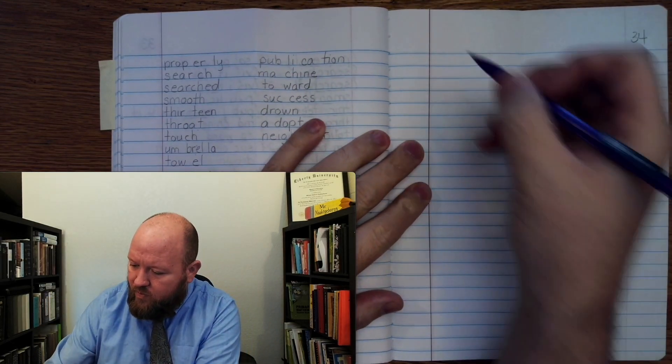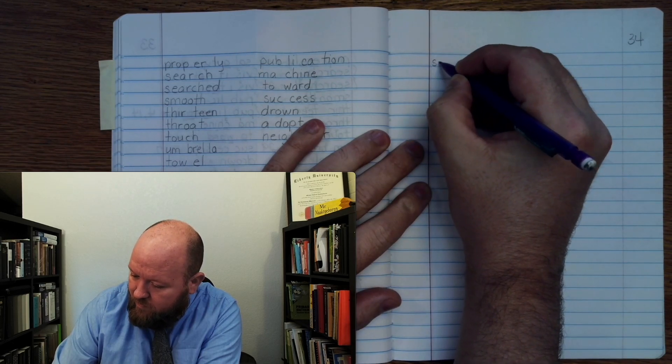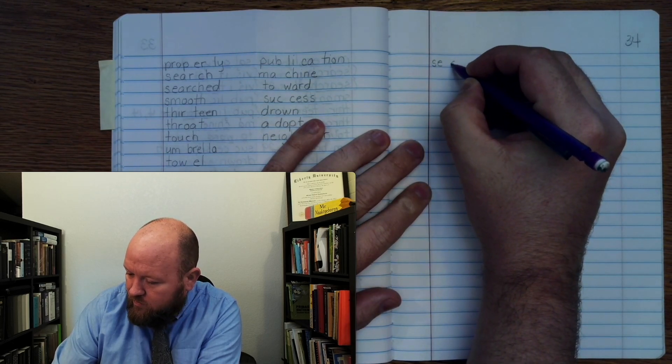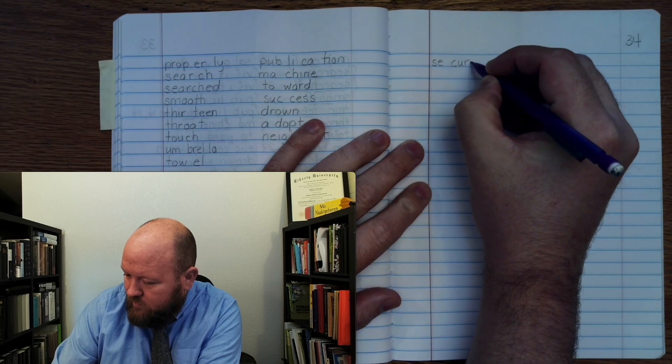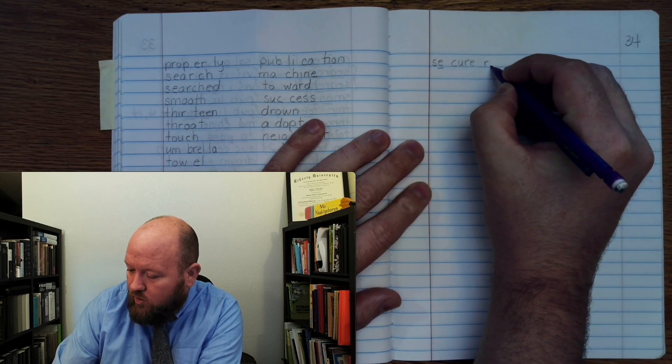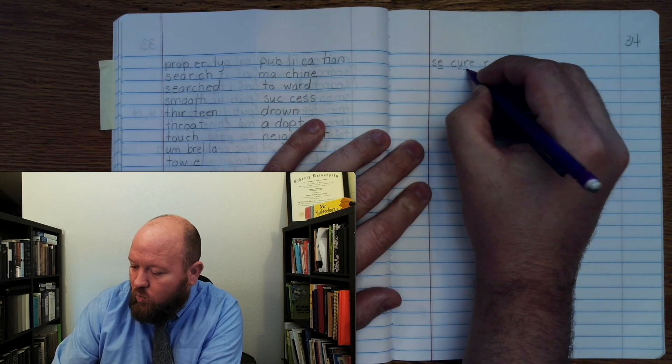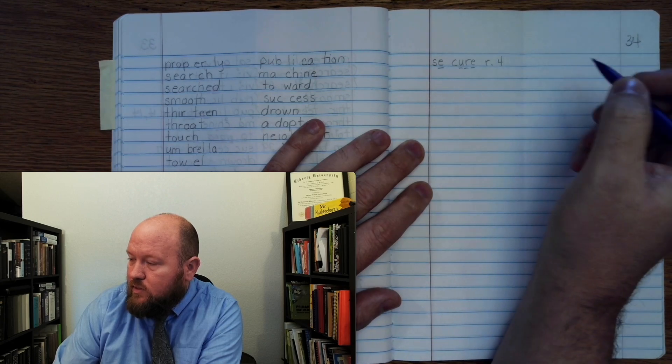Write secure. C-cure. Secure. C once, rule four. U once. R once. E once. Secure.